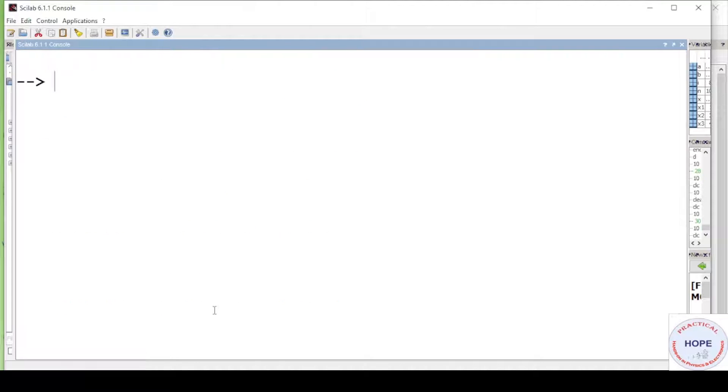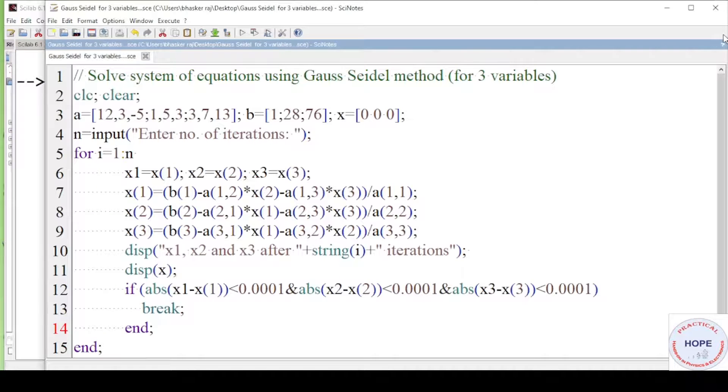Now this program is for three variables only. Say we increase the number of variables to 5 or 10 or more then it will be very difficult to write equations for individual variables. Therefore we need to find a way so that we can generalize the program for any number of variables. Let's see the concept behind that and then we will move on to the programming.